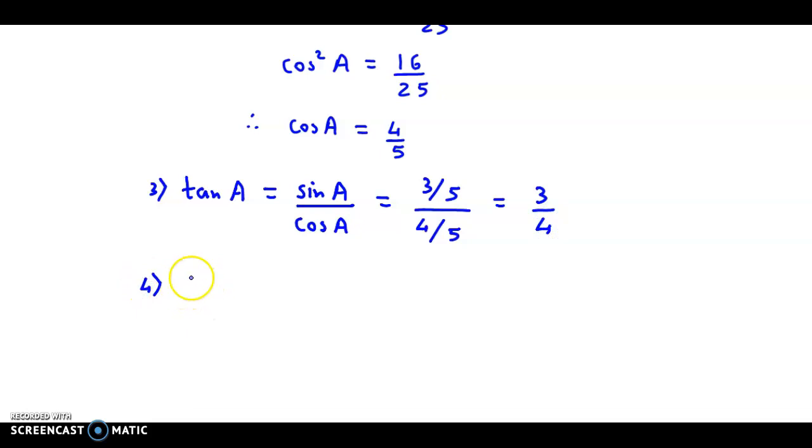Next, with the help of sin A, we could easily obtain cosec A. Cosec A is nothing but reciprocal of sin A, that is 1 over sin A. We have reciprocal of sin A. Sin A is 3 by 5. So, cosec A would be 5 by 3.